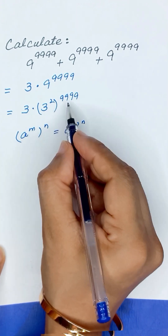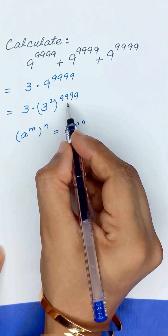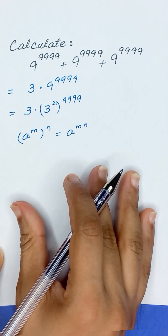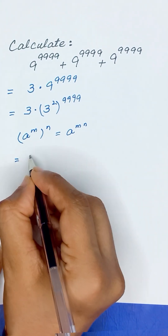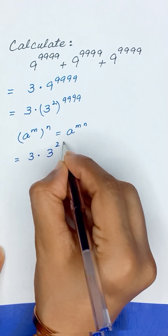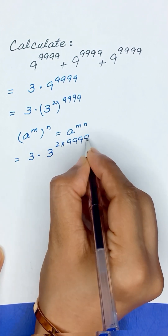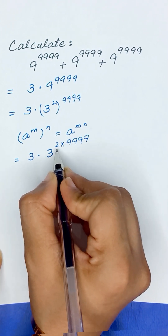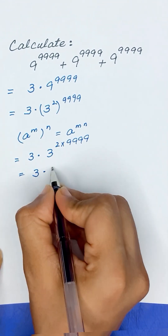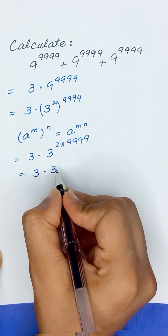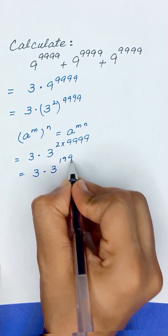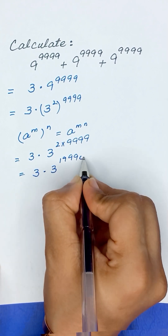The exponent can be written as 2 times 9999. So it will be 3 times 3 to the power 2 times 9999. And 2 times 9999 will become 19,998.